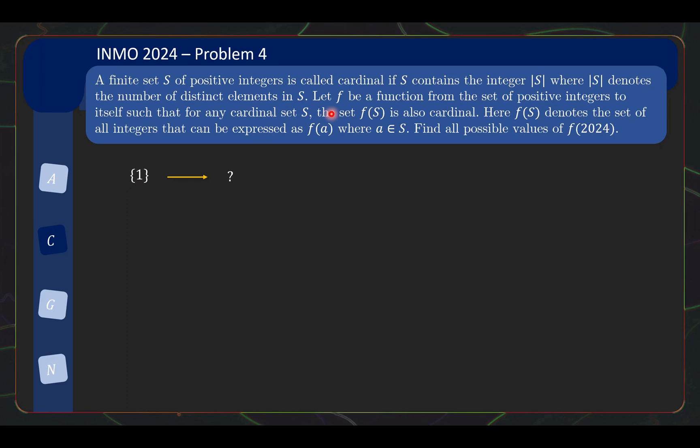So in order for F to be valid, what happens when we apply F to this? Well, 1 gets mapped to something which means it is a set of 1 element and for it to stay cardinal, it must therefore be 1. So what we can conclude is f(1) is forced to be equal to 1. Okay, that looks like a good progress.